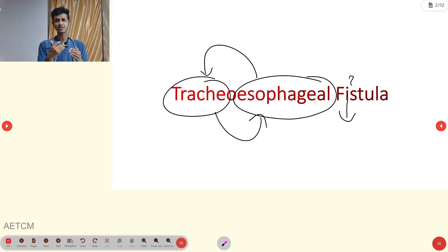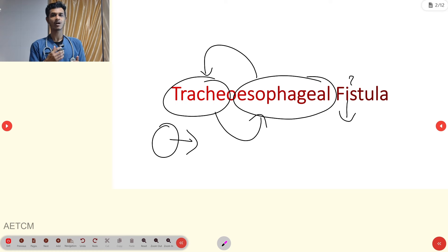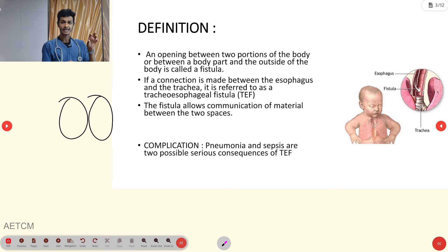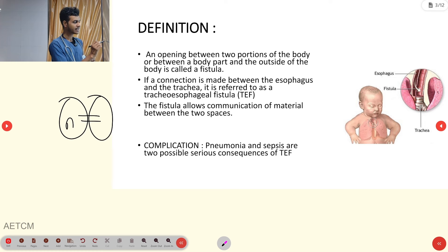A fistula can occur between two body parts or between a body part and the external environment — outside the body. Because of this abnormal connection between the trachea and esophagus, whatever content is in the trachea — that is, air — can easily move into the esophageal region. Through the fistula, this air can travel into the esophagus.